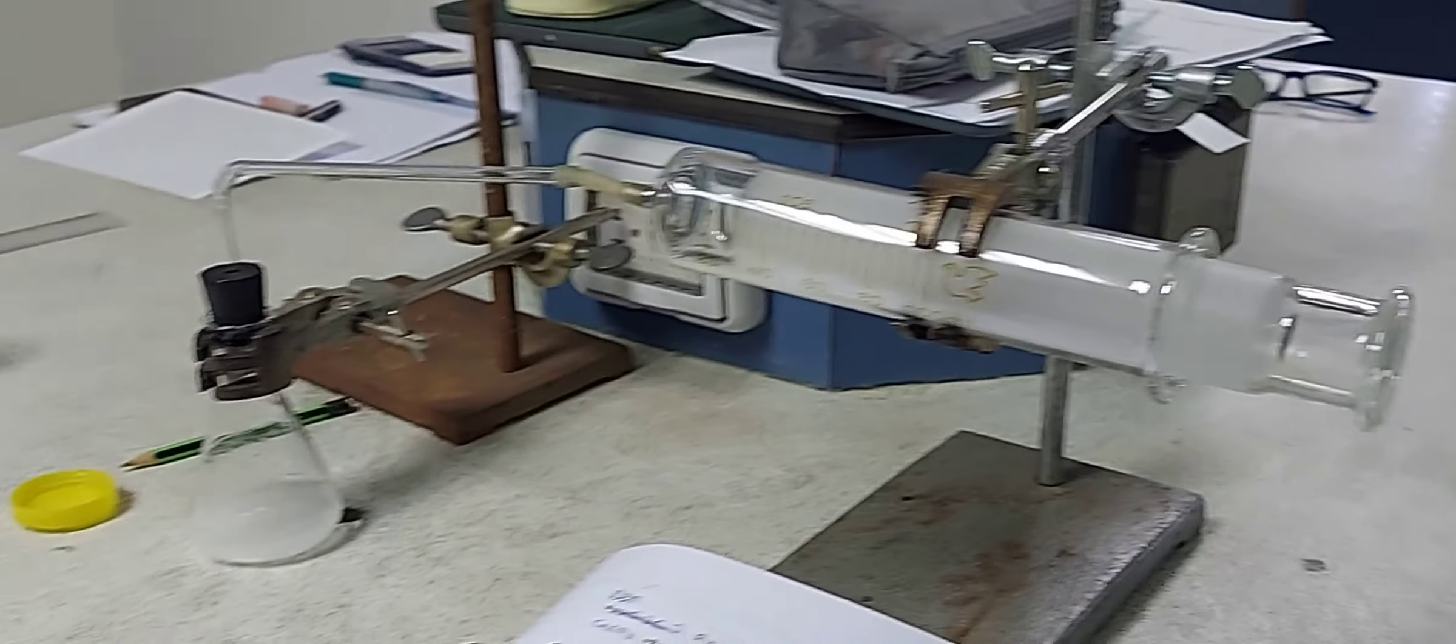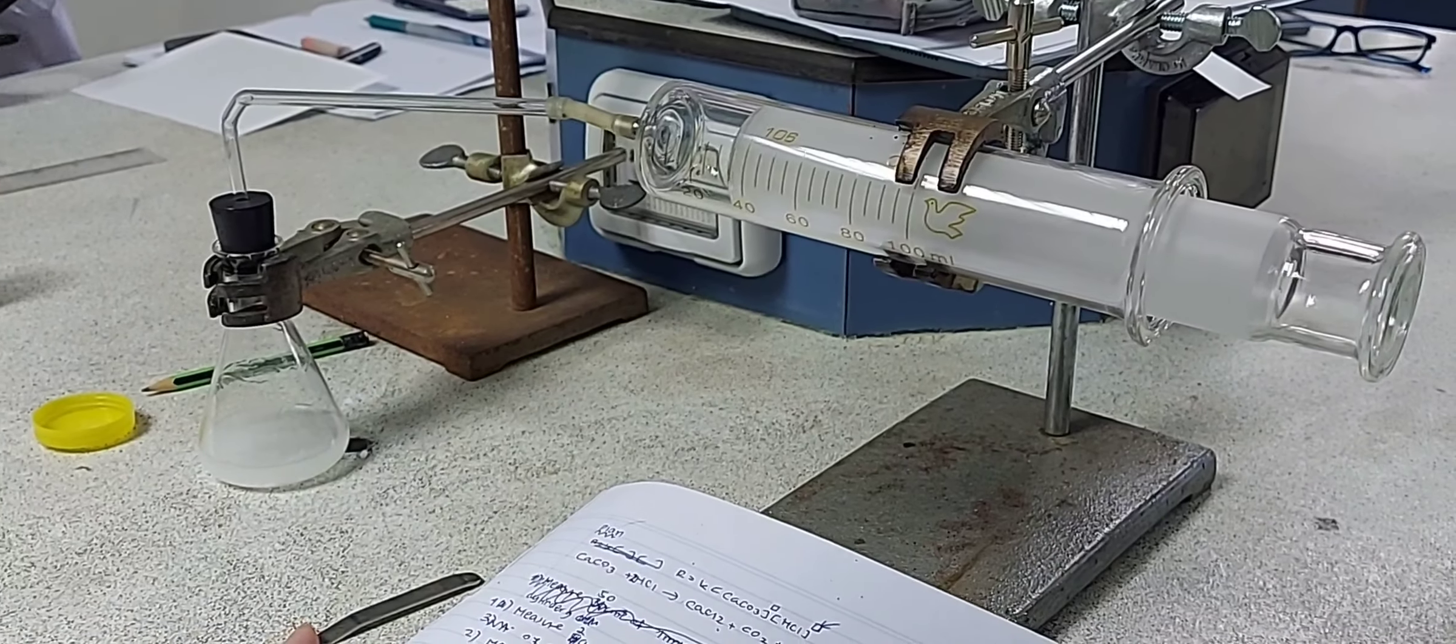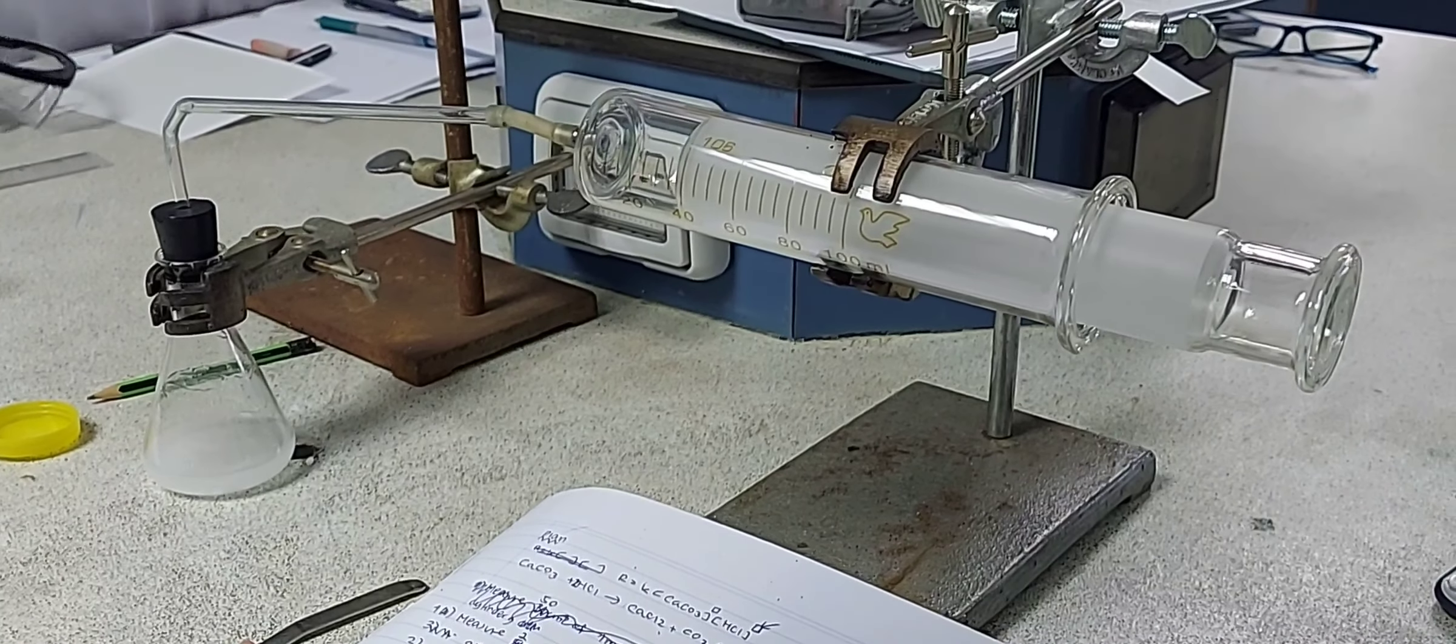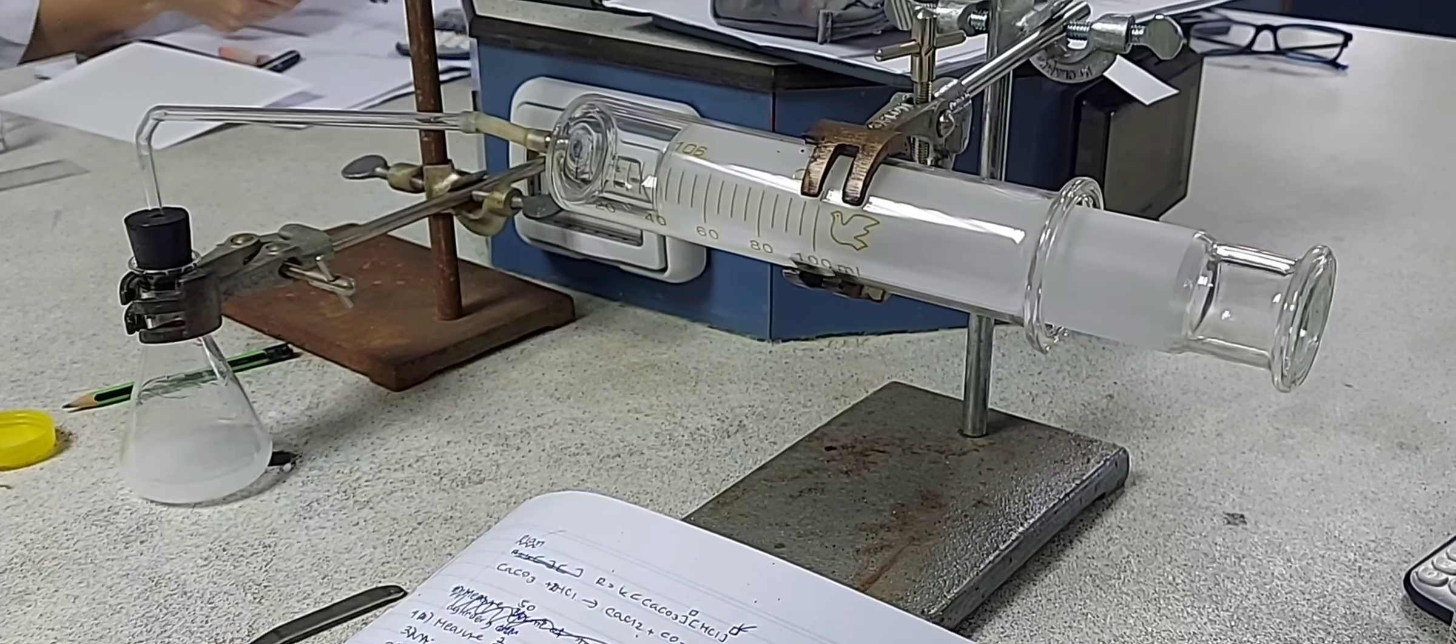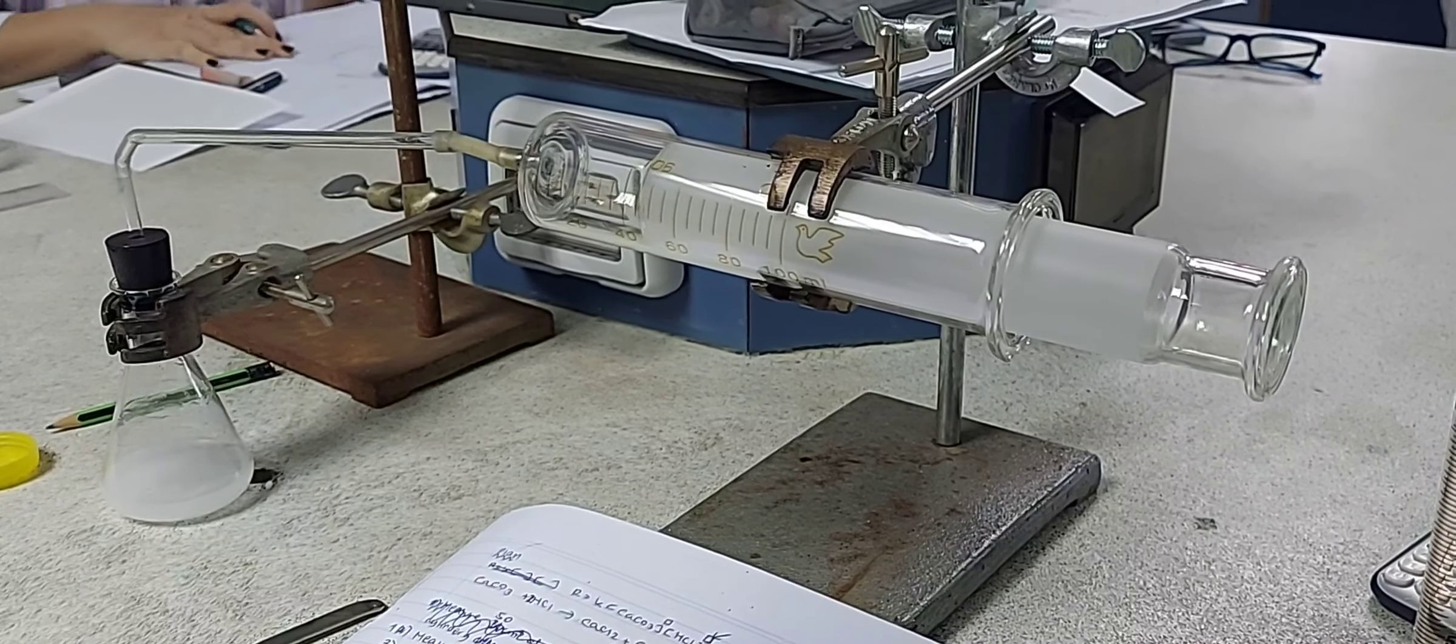You can see here the carbon dioxide is getting collected in the gas syringe and the plunger is moving to give the required volume of the gas collected.